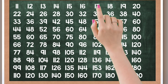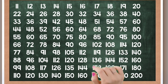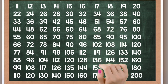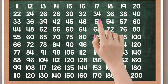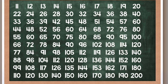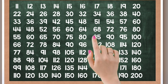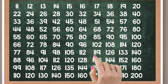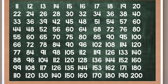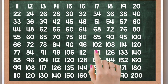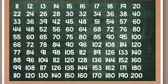17 times 1 is 17, 17 times 2 is 34, 17 times 3 is 51, 17 times 4 is 68, 17 times 5 is 85, 17 times 6 is 102, 17 times 7 is 119, 17 times 8 is 136, 17 times 9 is 153, 17 times 10 is 170.